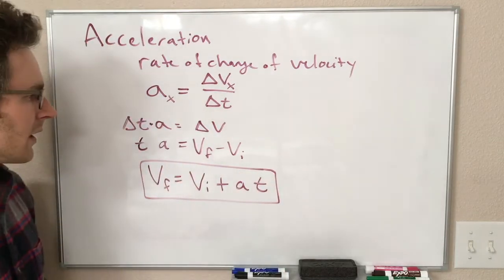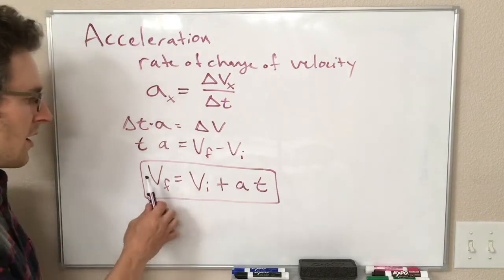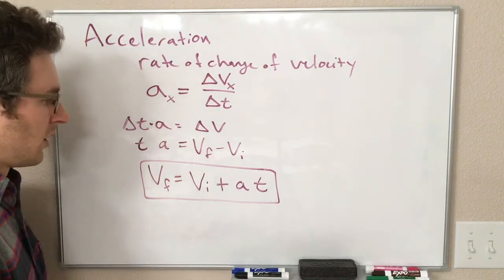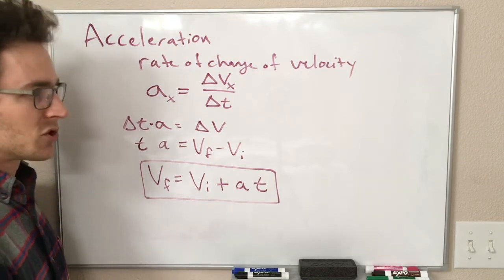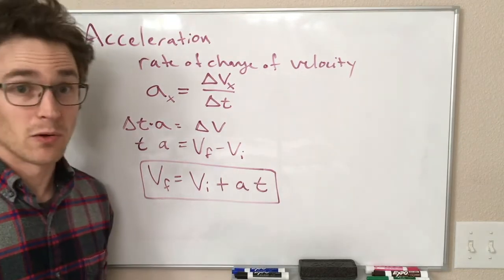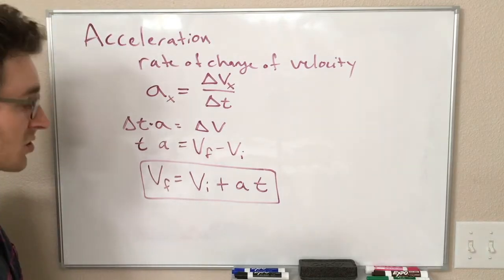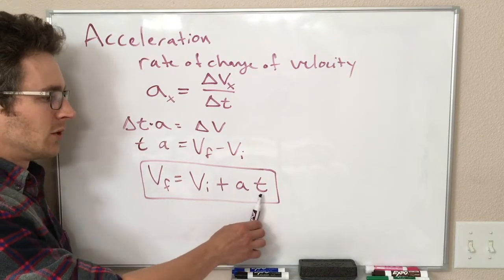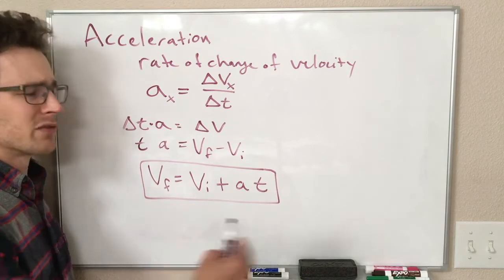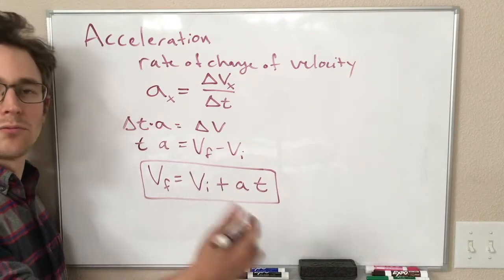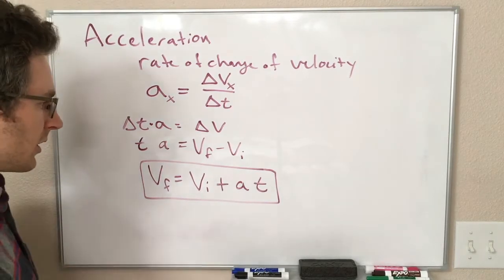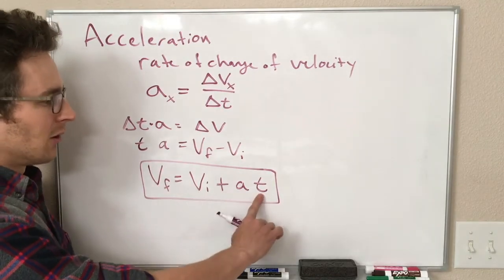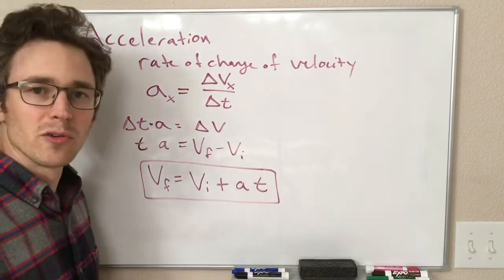Rearranging, we get V final equals V initial plus A times T. This looks a lot like the equation from the last lecture: X final equals X initial plus V times T for constant velocity. That's because the velocity is the rate of change of position, and this equation works because acceleration is the rate of change of velocity. So if we know V initial, our acceleration, and our time, we can find the final velocity — or if we know V final and V initial and the time, we can solve for acceleration.